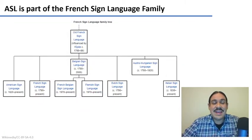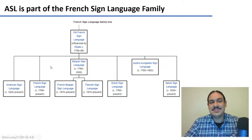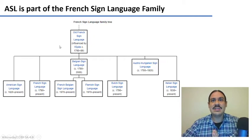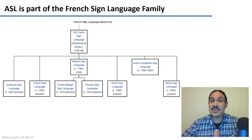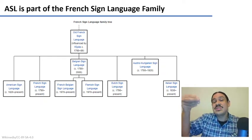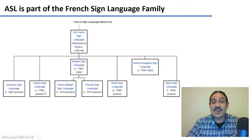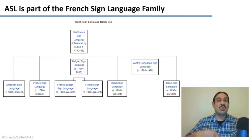Regarding ASL, it is related to the French Sign Language, and you can see part of the family here. ASL was heavily influenced — if not created — by a French teacher who came to North America. There was a school in France founded in the 1760s by a person called l'Épée, and a teacher of that school came to North America in the early 1800s. That school started teaching the old French Sign Language to children, and that's where ASL got started. ASL is related to modern French Sign Language, Belgian, Flemish, Dutch, and Italian sign languages, which means they share similar words and grammatical structures.